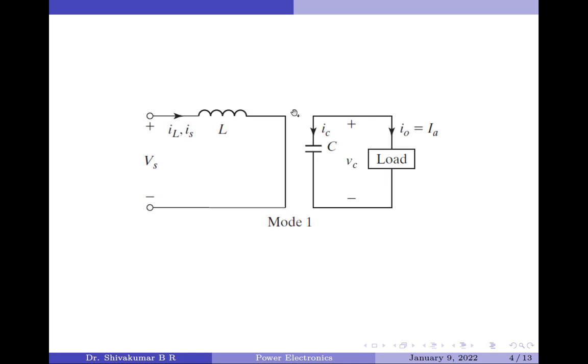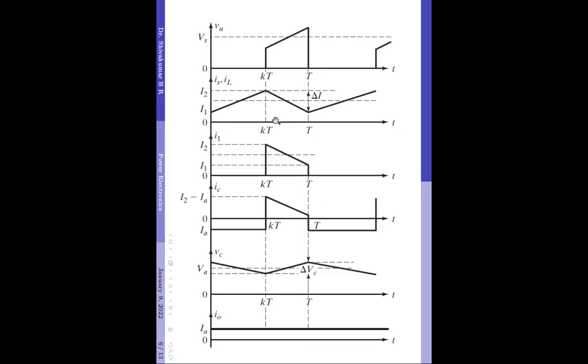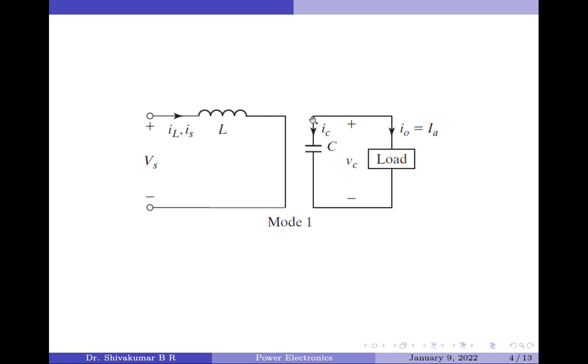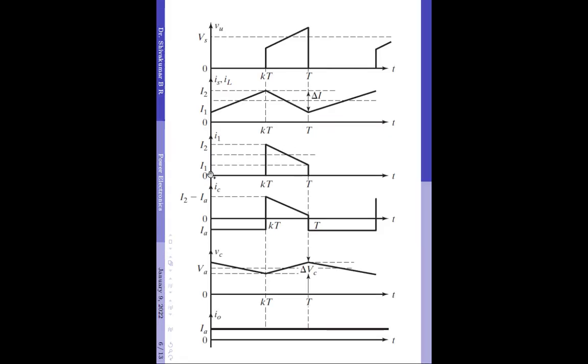The diode DM is turned off in this mode and therefore the load and supply are disconnected in mode 1. The inductor starts storing energy and therefore the inductor current starts to increase. This can be seen in the waveform here — the inductor current linearly rises. Let the minimum and maximum values of the inductor current be denoted as I1 and I2 respectively. The next waveform shown here is the current at the diode anode terminal. As the diode is in the off state in mode 1, this current is 0 in this mode.